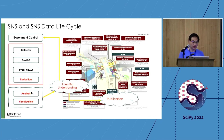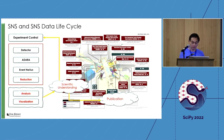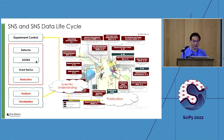After data reduction, there are typically two steps: data analysis and visualization, mostly using community-supported software. The user gains scientific understanding and either continues the experiment or produces a publication. The dream of professors when I was a postdoc was to push a button and 12 hours later the publication would be out — fully automated. That's the dream, of course.